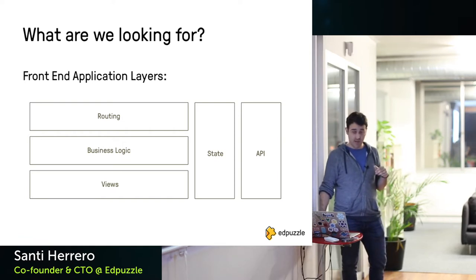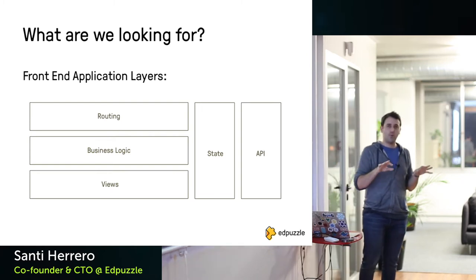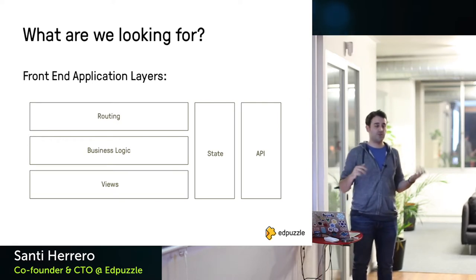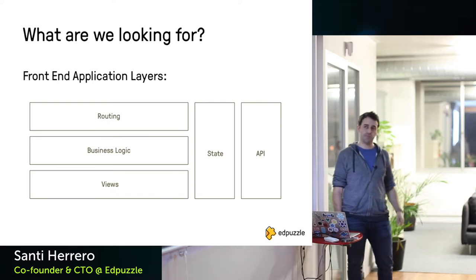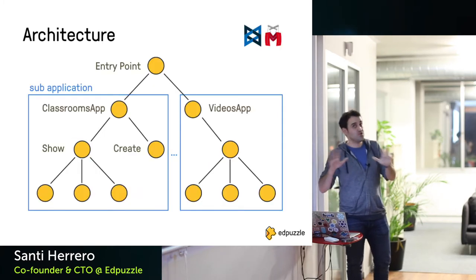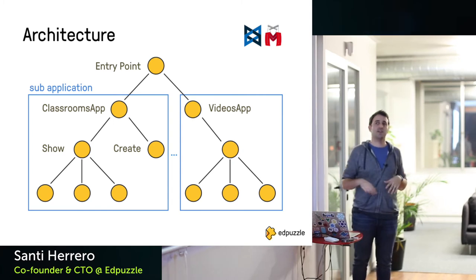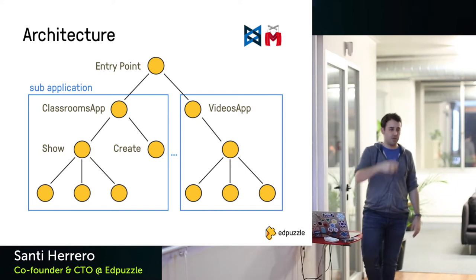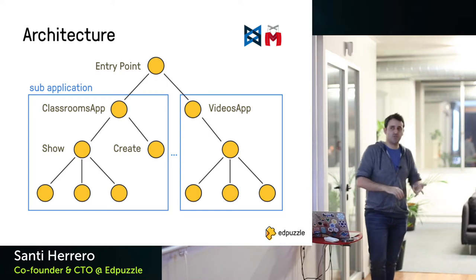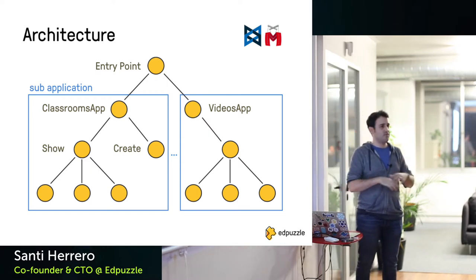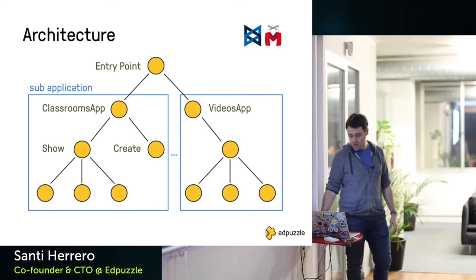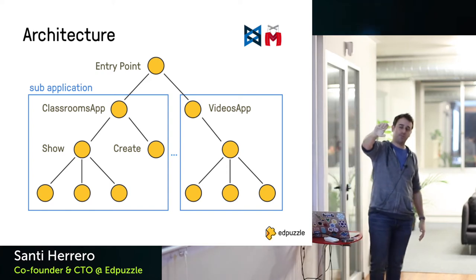So let's find all of these layers in our app. This is a super simplified schema of how our application is organized — you have an entry point and then about 25 or 26 applications, for example the classrooms app and the video app. The classrooms app has views for showing, creating, and editing a classroom; the video app has the teacher's content library and the video editor. Let's analyze the classrooms app from the entry point downward.